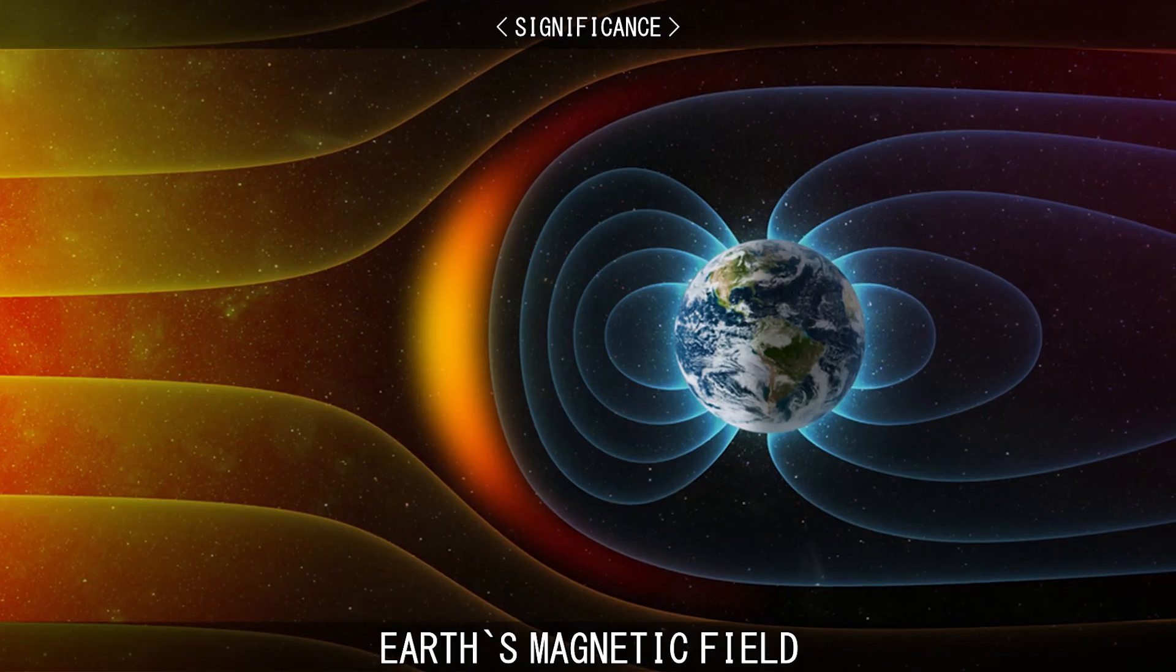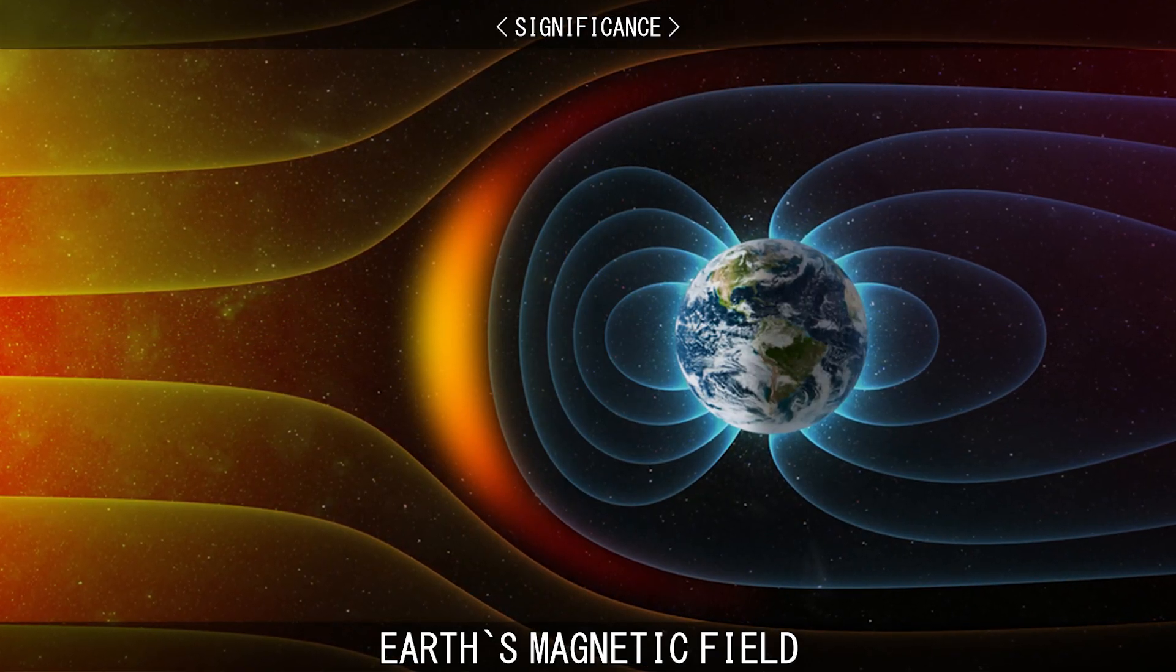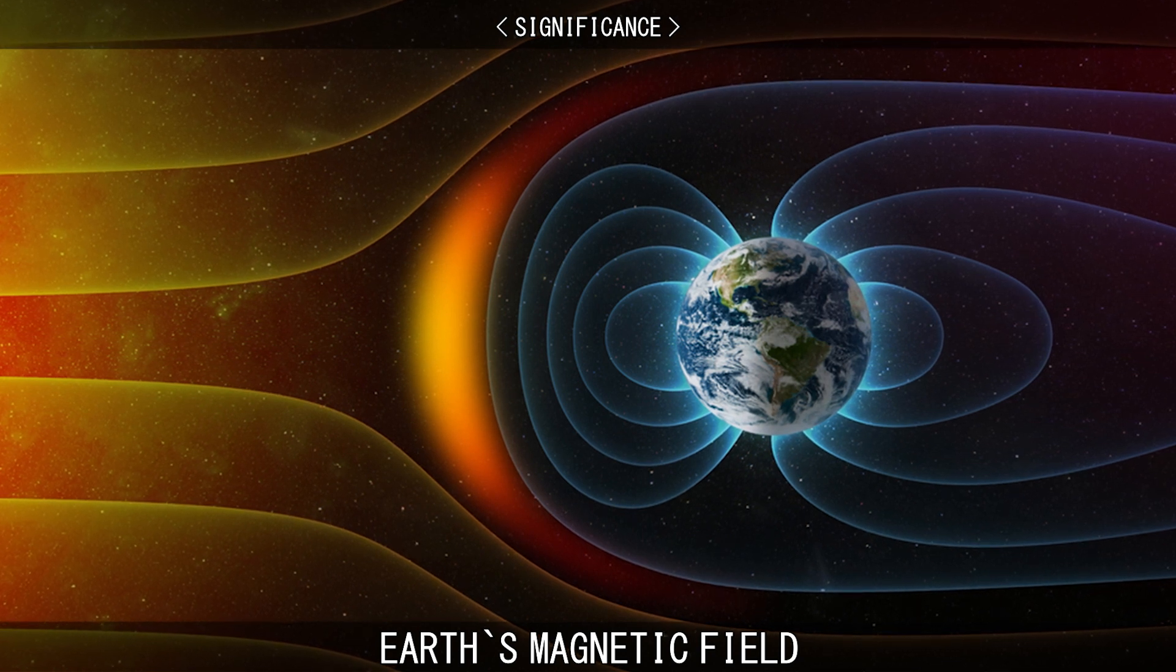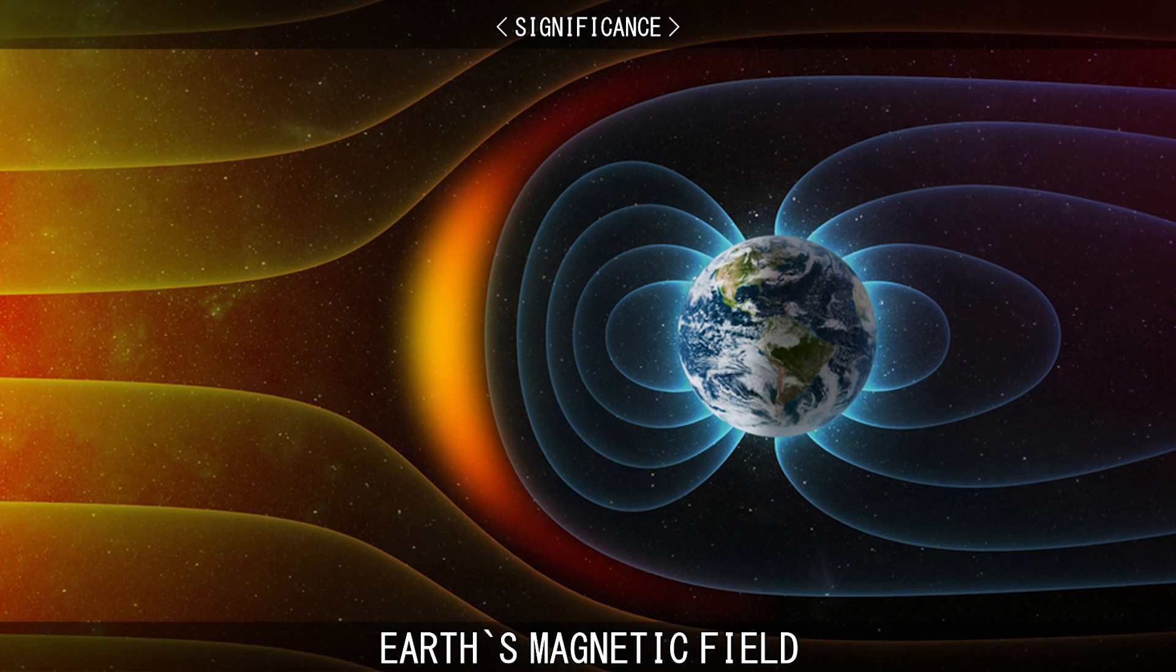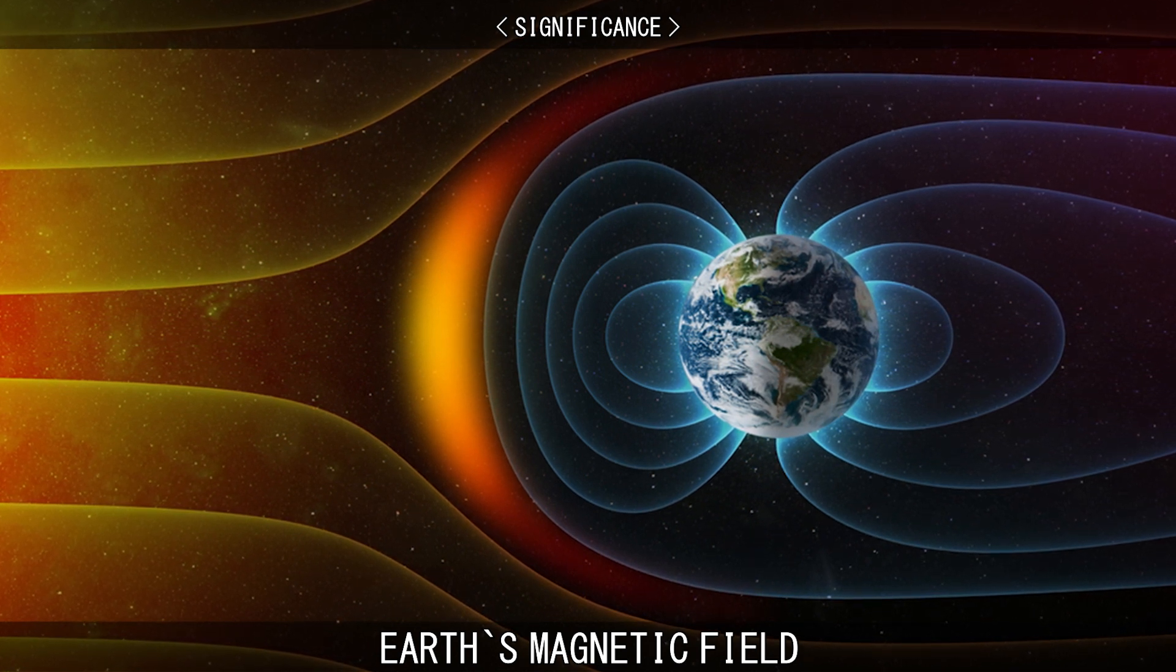The Earth's magnetic field is extremely important as it deflects solar winds away from the Earth. Solar winds are streams of charged particles which are emanated from the sun and could strip away the ozone layer.